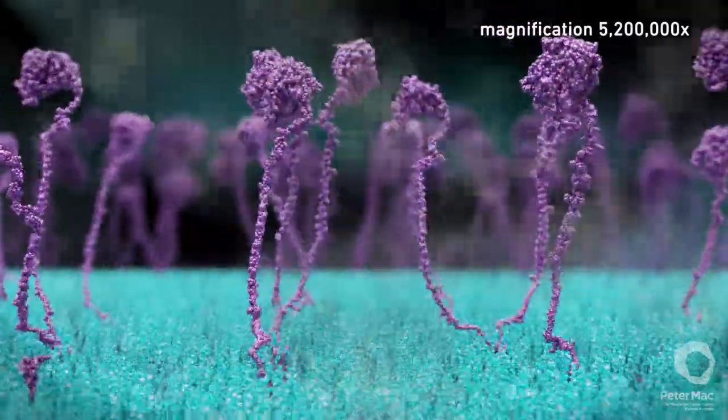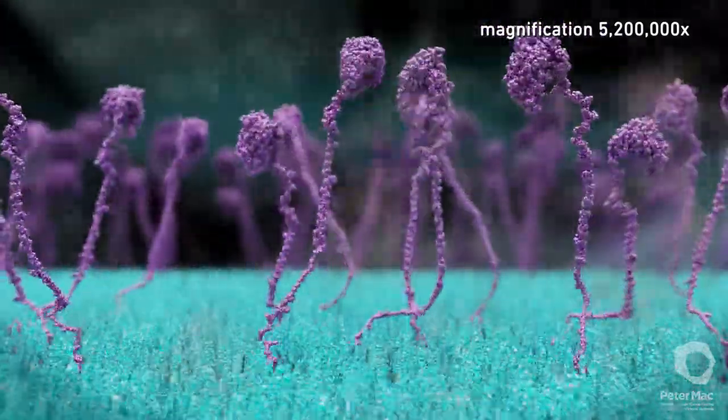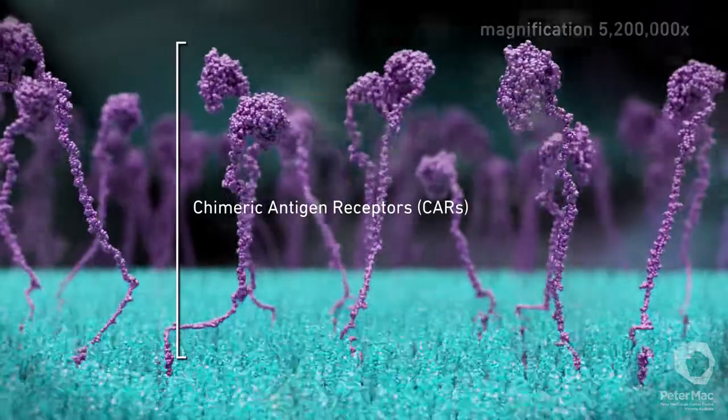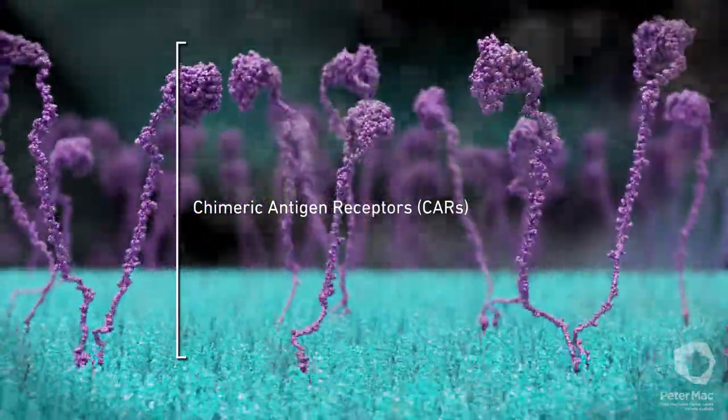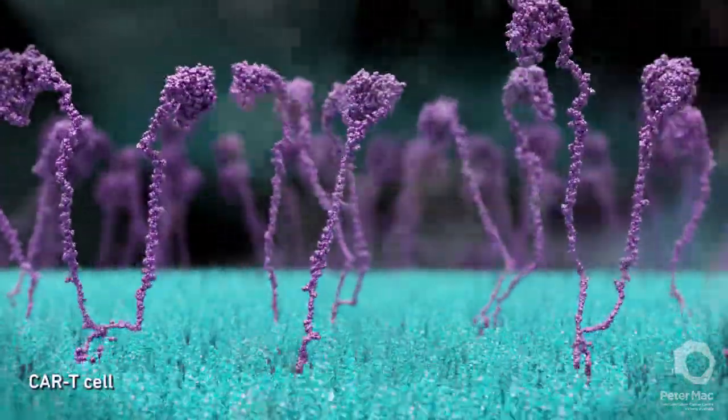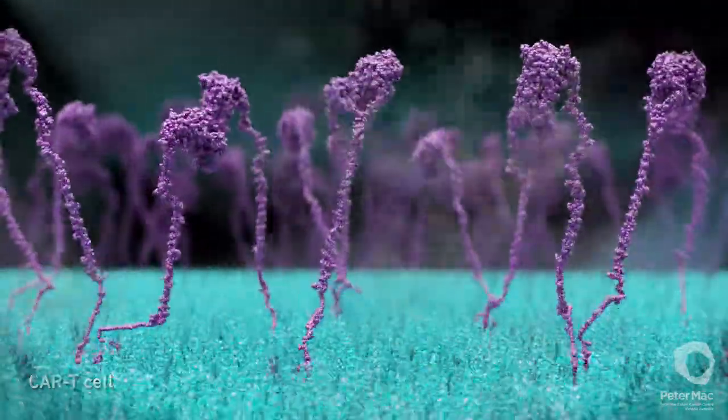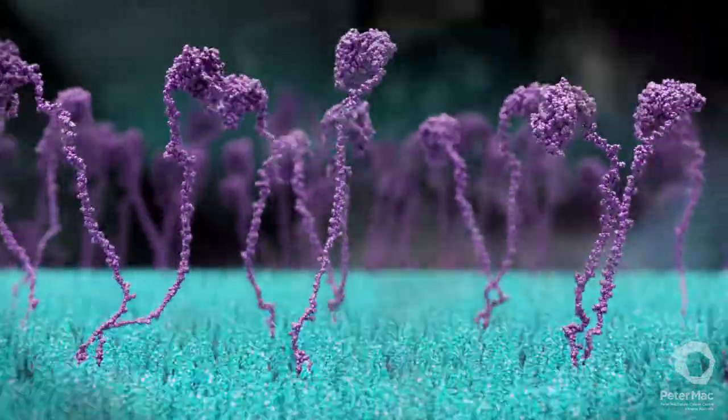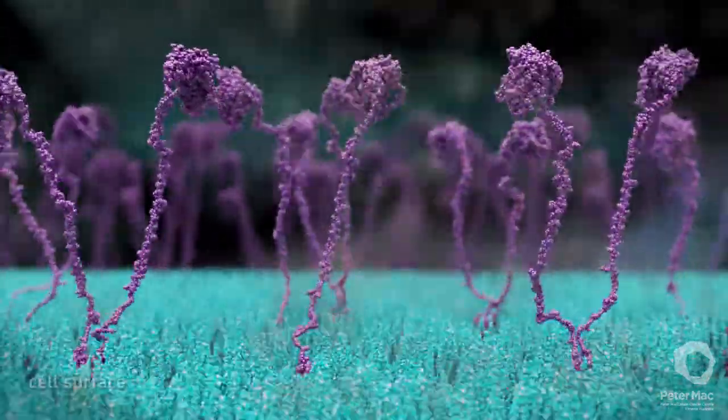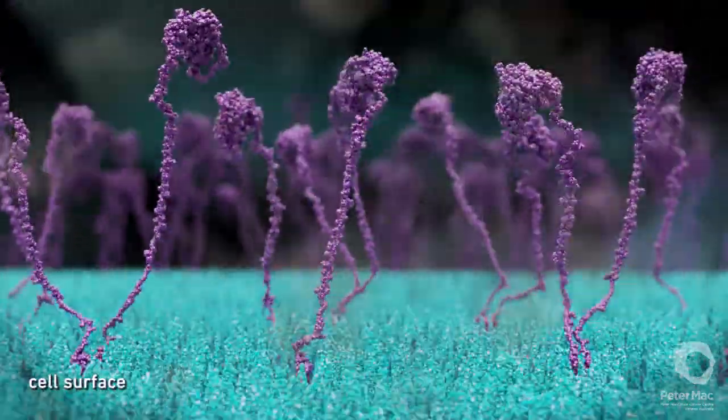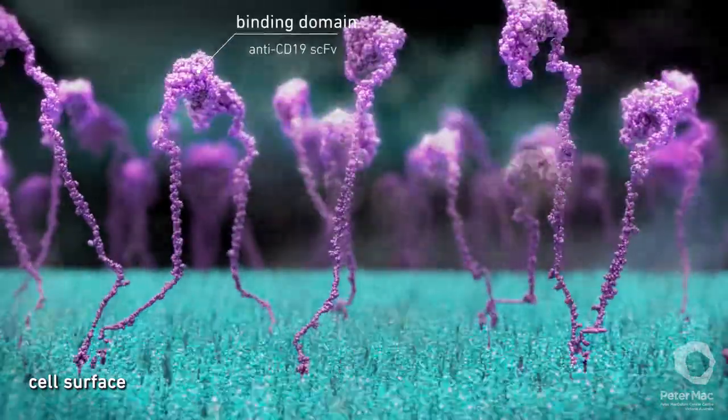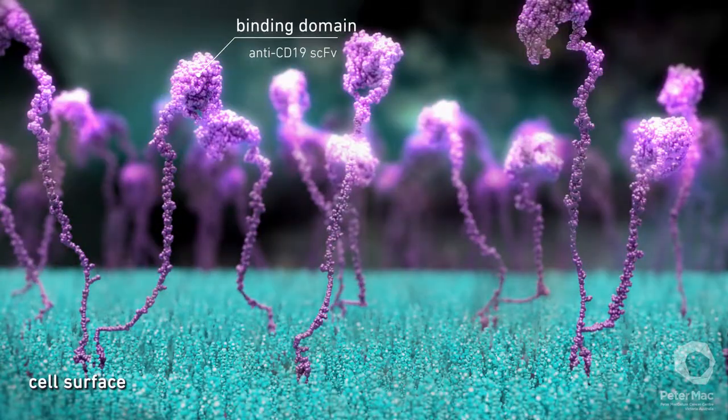The T cells are instructed to produce special receptors called chimeric antigen receptors or CARs on their surface, making them into CAR T cells. The CARs consist of different components that occur naturally in cells but which are never found together. The CARs sit on the surface of the cell and are engineered to recognize and attach to a patient's cancer cells via the binding domain.